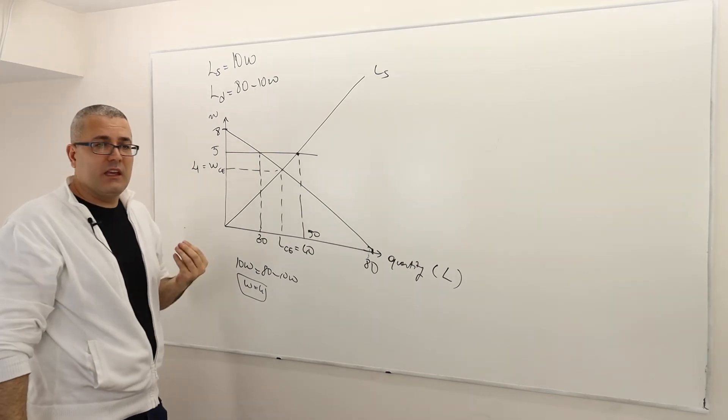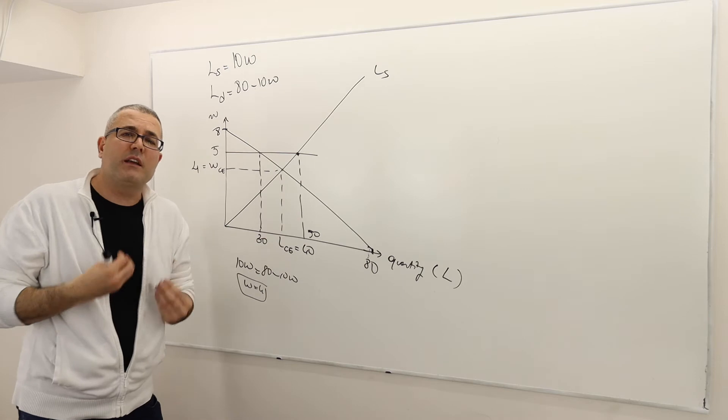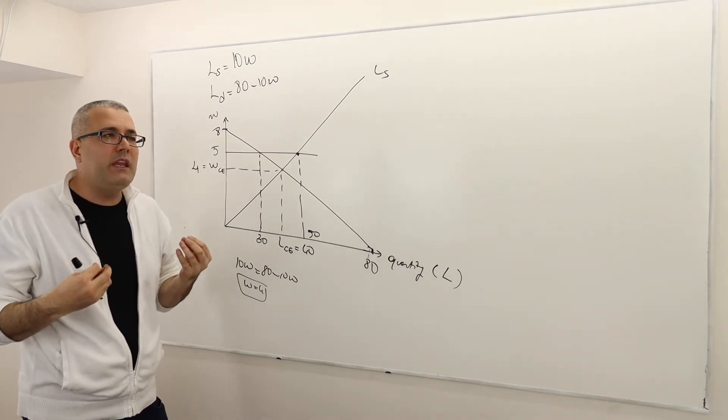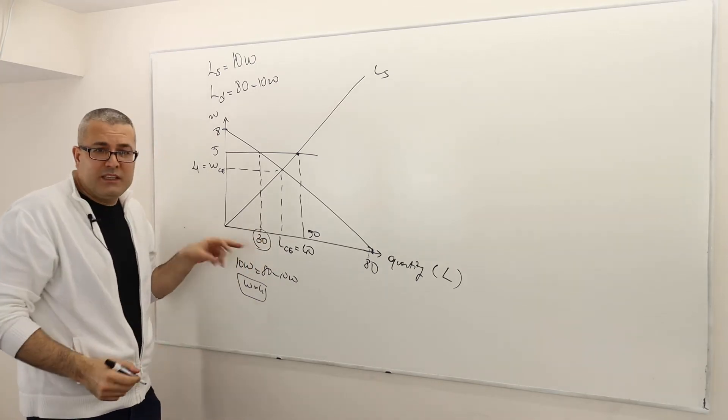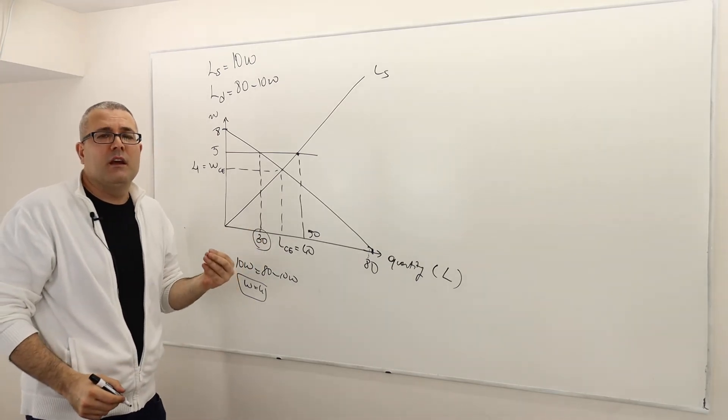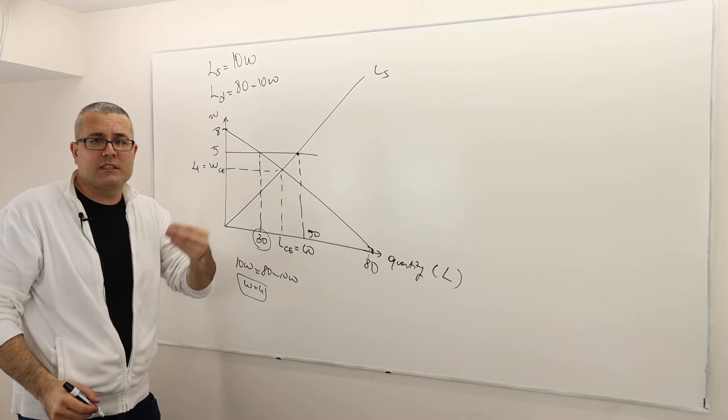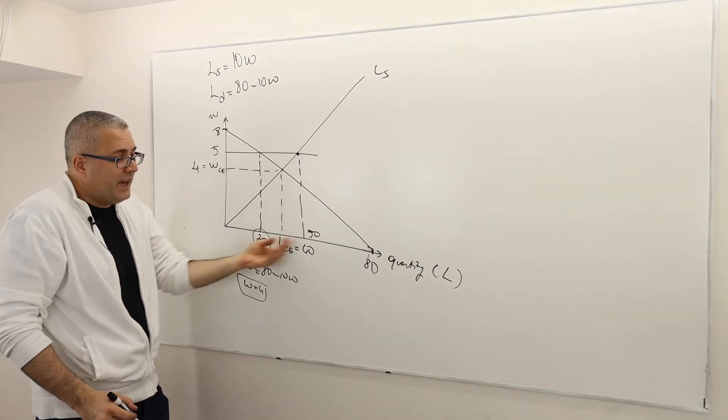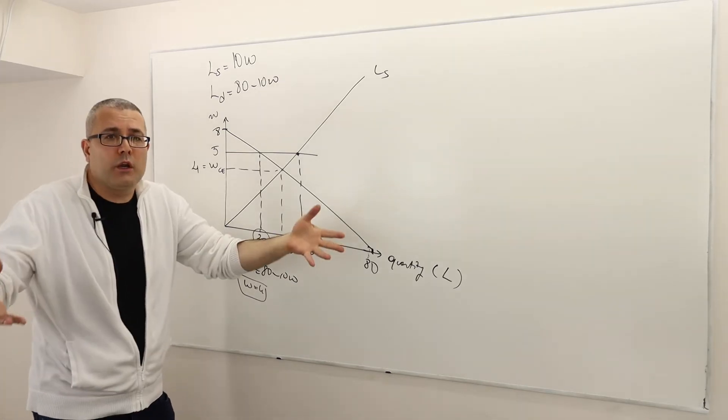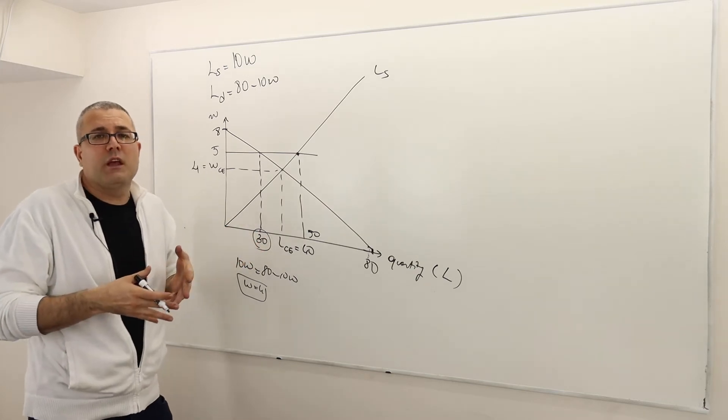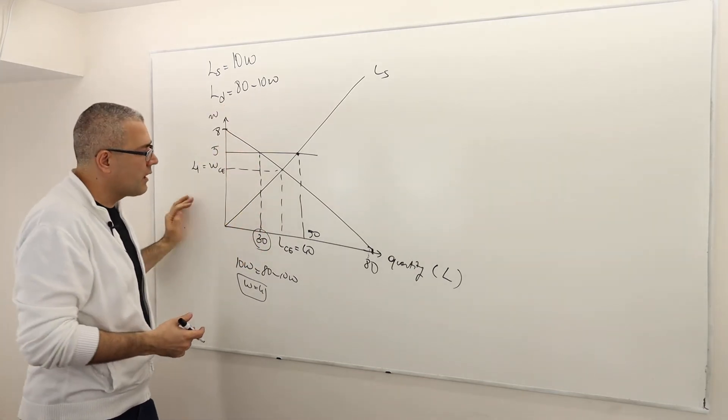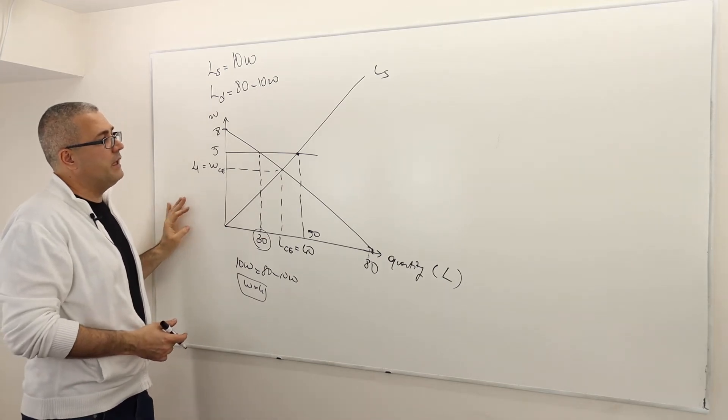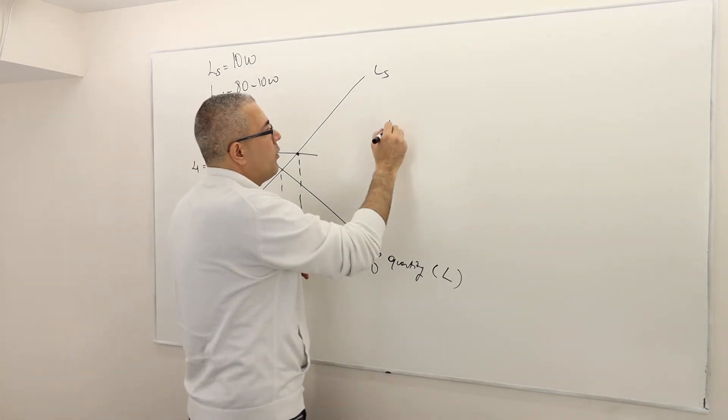Well, the thing is, what is going to be the market outcome? Meaning, how many workers are going to be hired? Well, here, obviously, the demand will determine the number of workers that is going to be hired. Yes, 50 people would love to work, but only 30 of them can be hired because there's not enough demand.